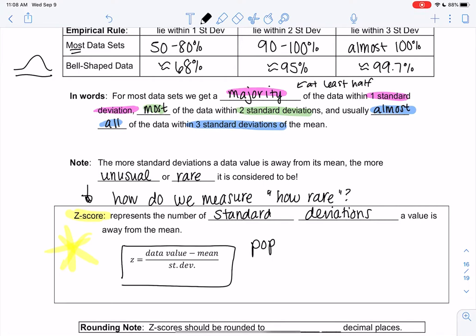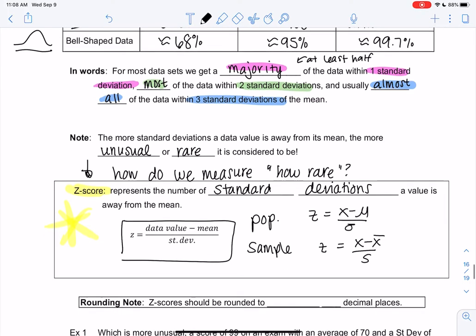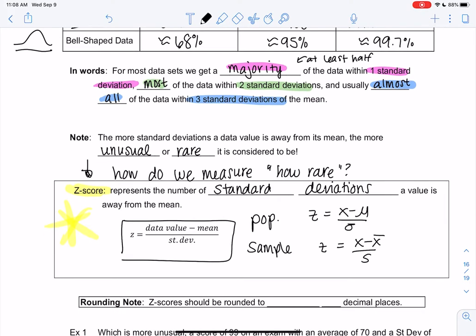If you like symbols instead, for a population it would be x minus mu over sigma, and for a sample it would be x minus x-bar over s. Right, data value is x minus the average, divide by the standard deviation. I usually just write in words because then I don't have to worry about sample or population.